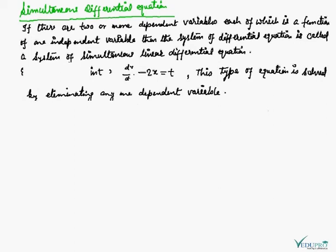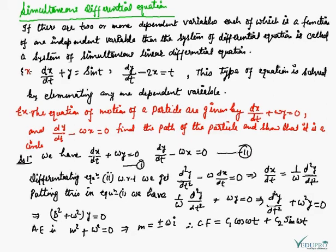So here we are going to take an example to understand it. The example is: the equations of motion of a particle are given by dx/dt + ωy = 0 and dy/dt - ωx = 0. Find the path of the particle and show that it is a circle.